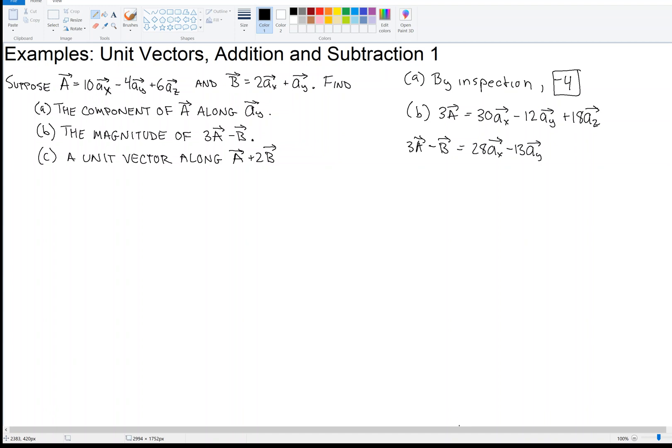And then for the Z direction, I have 18 and then a 0 here. So I have plus 18 in the Z direction. So I want the magnitude of this thing. So the magnitude of 3A minus B. How do we get the magnitude?